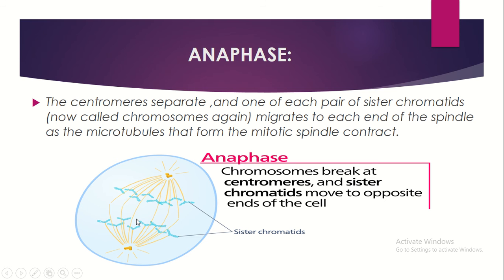In anaphase, the centromere separates and each pair of sister chromatids — now called chromosomes again — migrates to each end of the spindle as the microtubules that form the mitotic spindle contract.